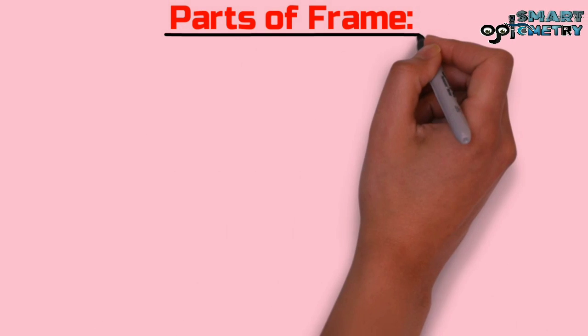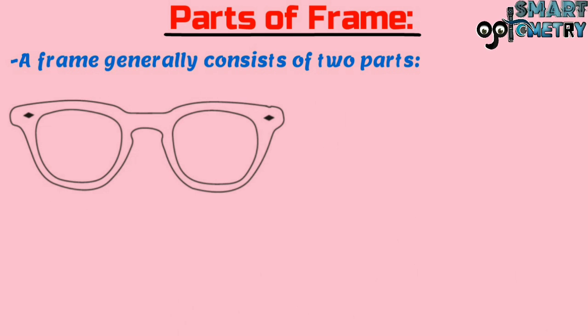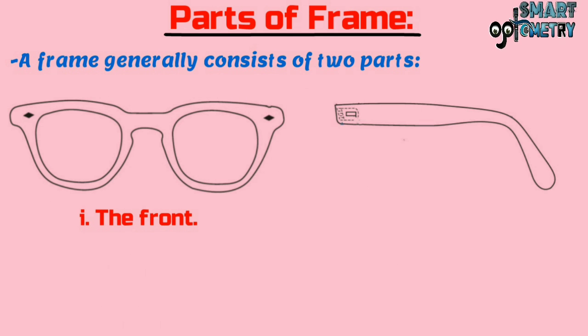Now the parts of the frame. A frame generally consists of two parts: one, the front; two, the temples.